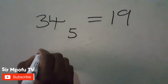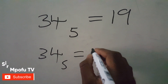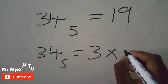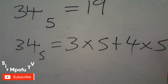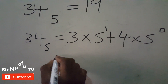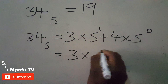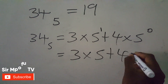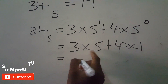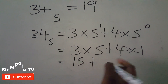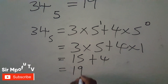Now I'm going to use the expansion method. You write three times five to the power one, plus four times five to the power zero. Five to the power zero is one, so it becomes three times five plus four times one, which is 15 plus 4, which equals 19. Same answer confirmed.